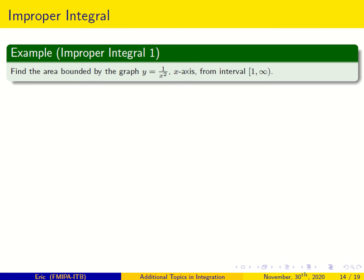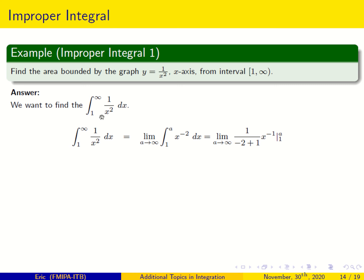We know that y equals 1 over x squared from interval 1 until infinity is above the x-axis. So the area will be given by the integral of 1 over x squared dx from 1 until infinity. Can we find the area? So, don't forget — if we have the improper integral, this is just the limit when a goes to infinity.